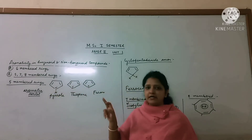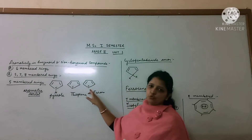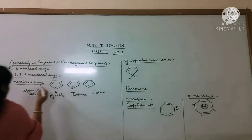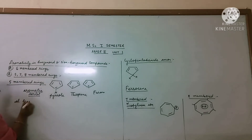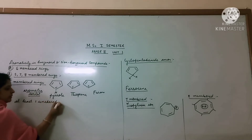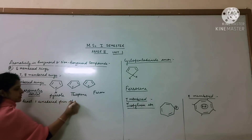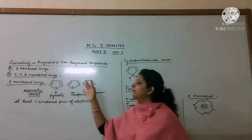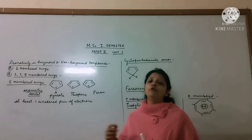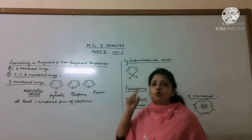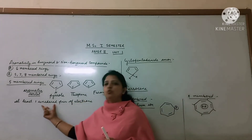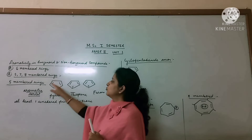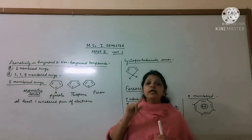There are heteroatoms present — whether nitrogen, sulfur, or oxygen. At least one unshared pair of electrons, that is a lone pair, is present on each heteroatom. This lone pair does not participate in bonding; instead, it participates in the resonance of this molecule and it becomes an aromatic sextet.